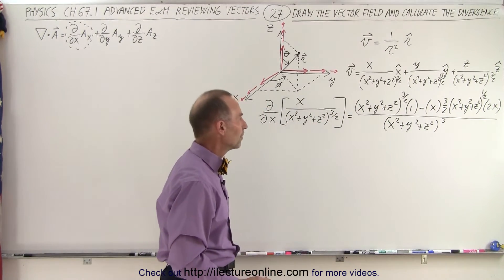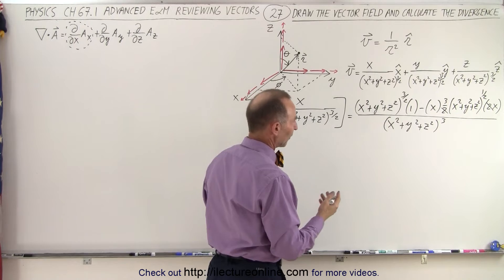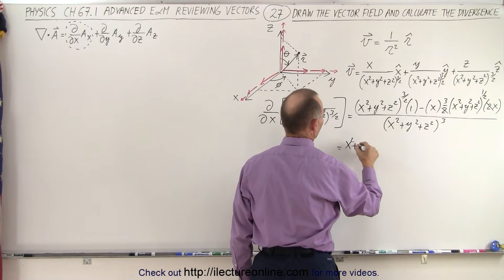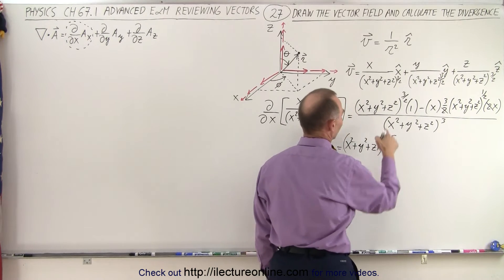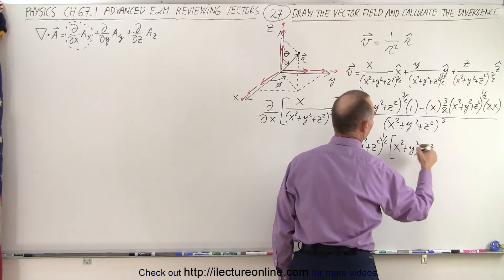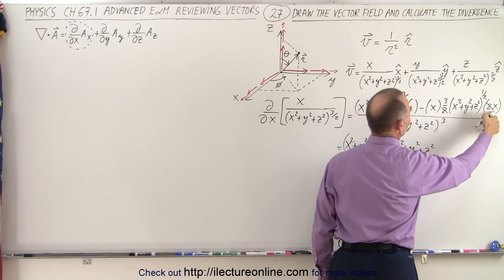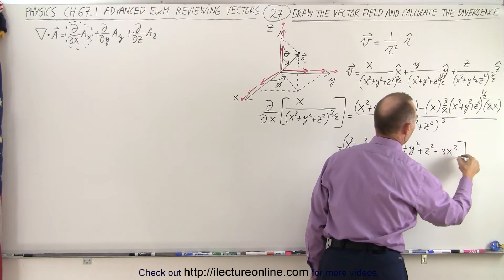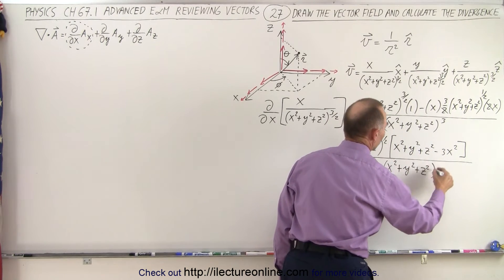Simplifying things a little bit: the 2 cancels out, and we factor out x squared plus y squared plus z squared to the 1 half power. This is equal to x squared plus y squared plus z squared to the 1 half power, times the quantity — x squared plus y squared plus z squared to the 1st power times 1, minus 3x squared — all divided by x squared plus y squared plus z squared to the 3 halves power.